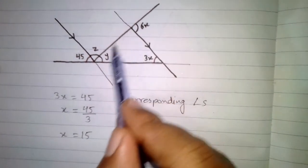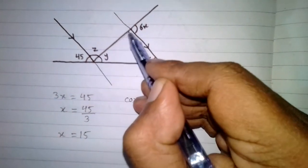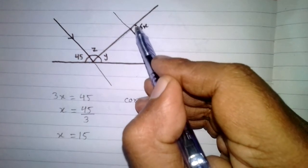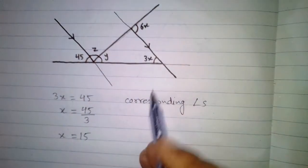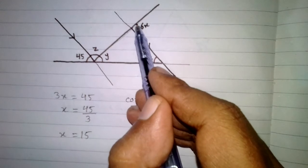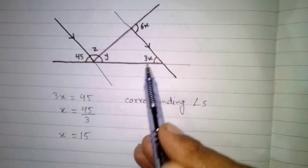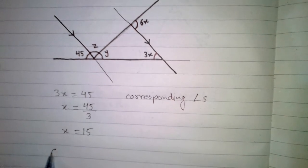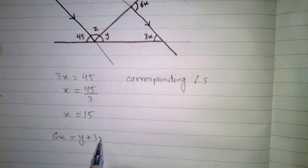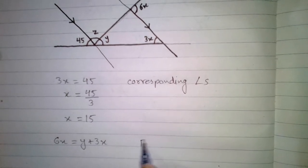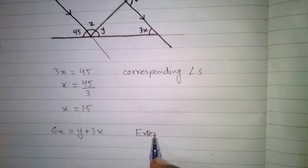Now we will find the value of Y. We have a triangle, and if this line is extended, an exterior angle is formed which is 6x. We know that the exterior angle of a triangle is equal to the sum of the opposite interior angles, so 6x is equal to Y plus 3x.